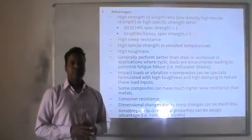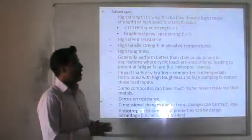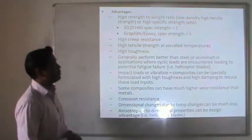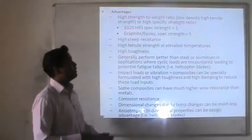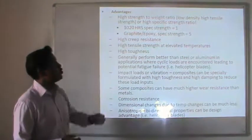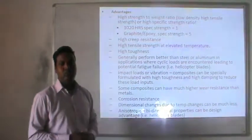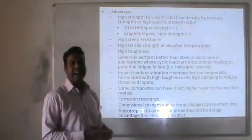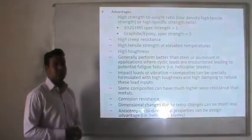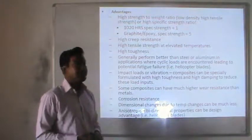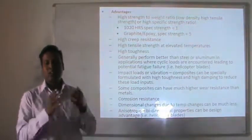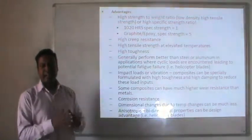Advantages of composite materials include a high strength-to-weight ratio, meaning low density with high tensile strength or high specific strength ratio. For comparison, 1020 hot-rolled steel has a specific strength ratio of 1, while graphite-epoxy composite has a specific strength ratio of 5. Other advantages include high creep resistance, high tensile strength at elevated temperature, and high toughness.